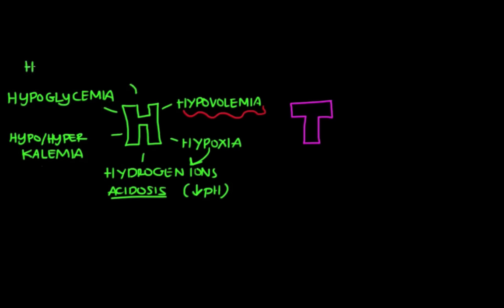And the last H we're going to talk about is hypothermia, or low body temperature. And typically we think of hypothermia as a temperature less than 95 degrees Fahrenheit, or 35 degrees Celsius. So as a person's core temperature drops, the heart's pacemaker cells fire less and less, and eventually the heart can stop.